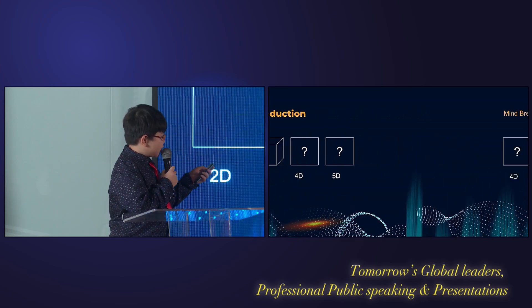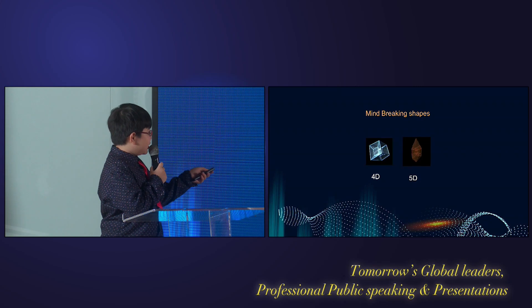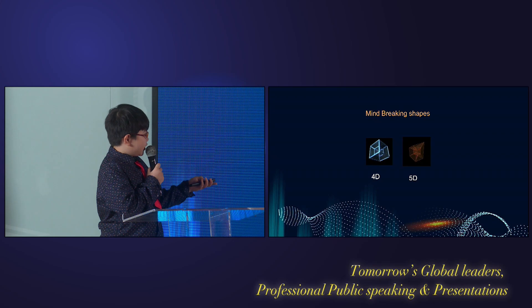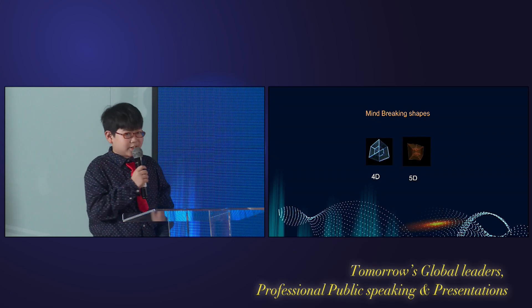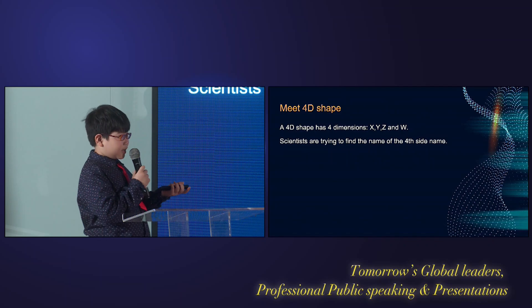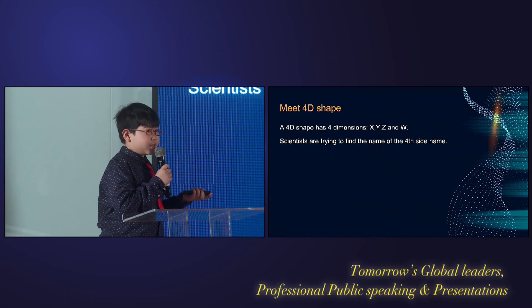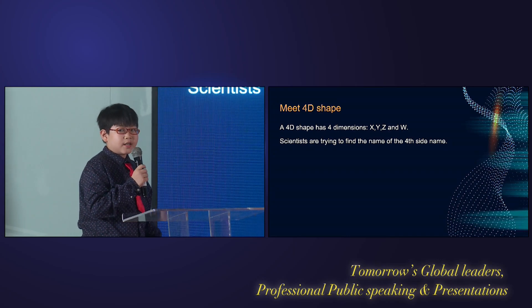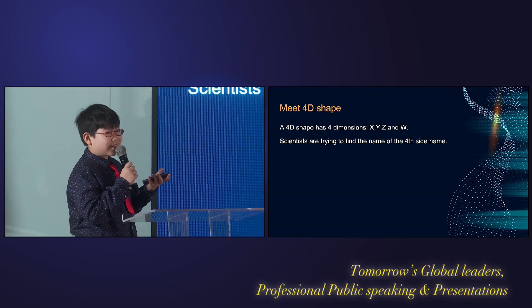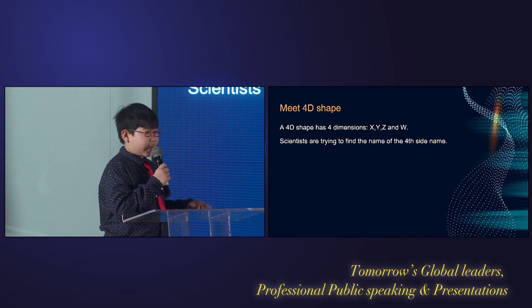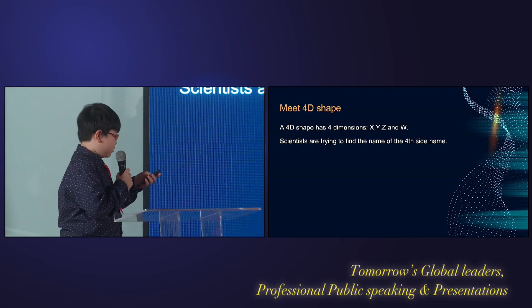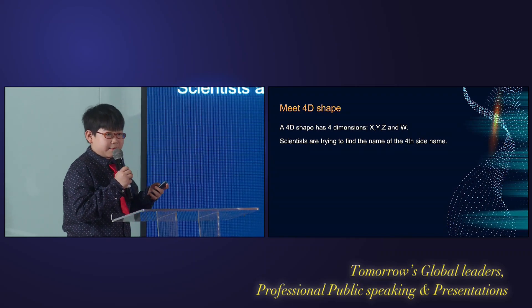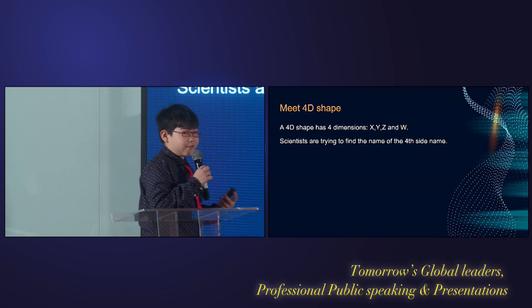What about the fourth and fifth dimension? Well, this is what they look like, but today we're not going to talk about the fifth dimension. I'm going to explain the fourth dimension — it has four sides: x, y, z, and w. The fourth axis hasn't got a name yet because scientists are trying to find a perfect term.